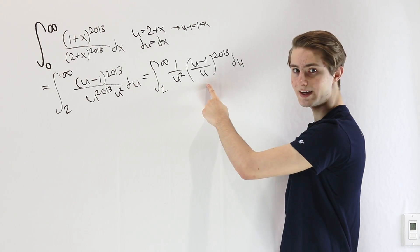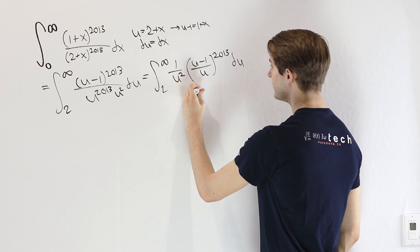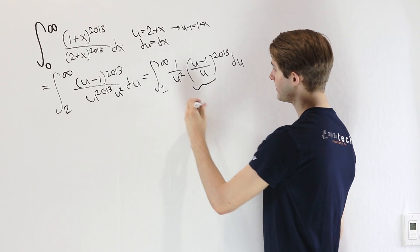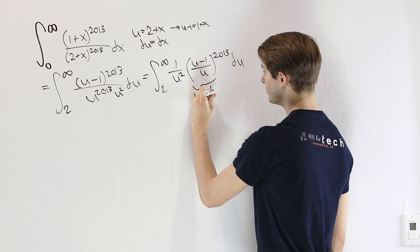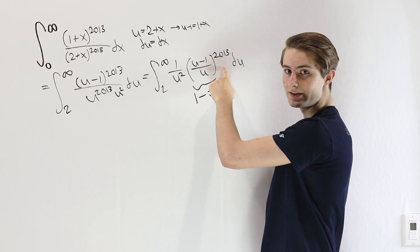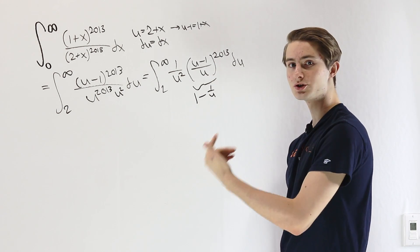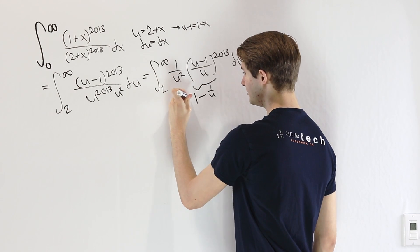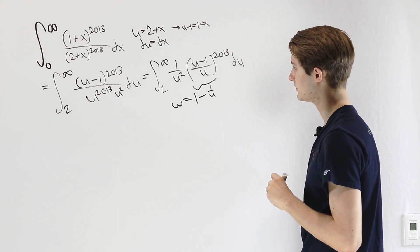When we look at the inside of this power here, we can rewrite this, because this u is on the bottom, as 1 - 1/u. So if this is our inside expression inside of that gigantic power, we might want to try substituting that. We could let, for example, w equal 1 - 1/u.